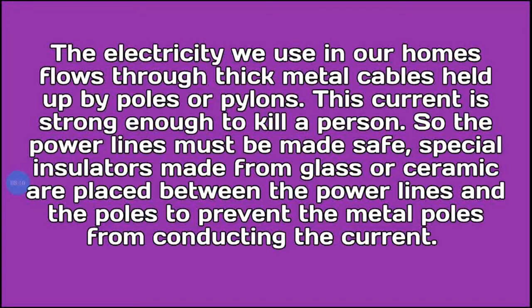The electricity we use in our homes flows through thick metal cables held up by poles or pylons. This current is strong enough to kill a person, so power lines must be made safe. Special insulators made from glass or ceramics are placed between the power lines and the poles to prevent the metal poles from conducting the current. If you look at poles in the street, you can see ceramic plate-like objects on the wires.